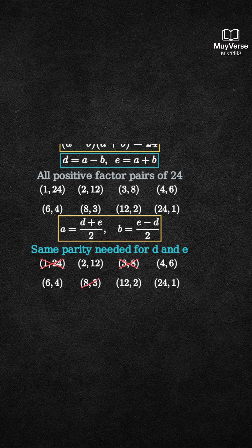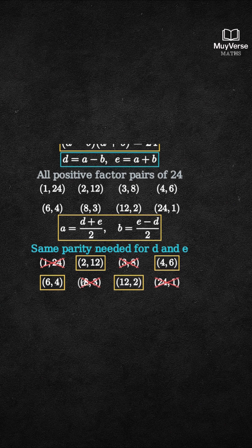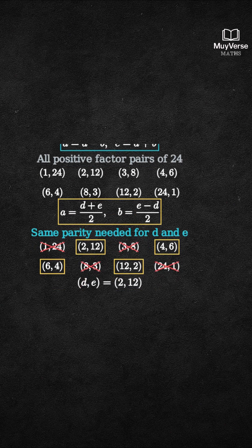Step 4: solve for a and b from each even-even pair. First, d equals 2 and e equals 12. Then a equals (2 plus 12) over 2 equals 7, and b equals (12 minus 2) over 2 equals 5. Valid.